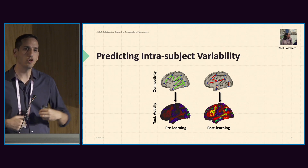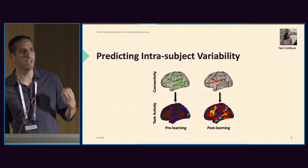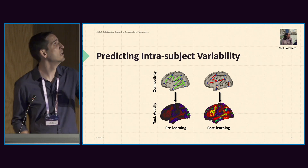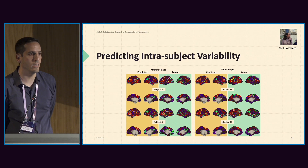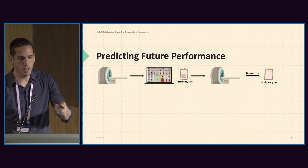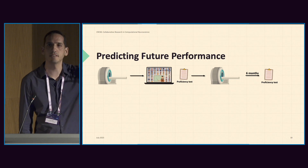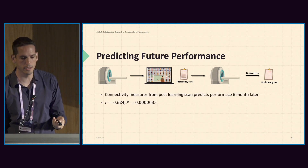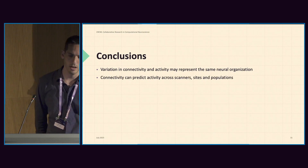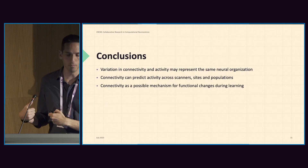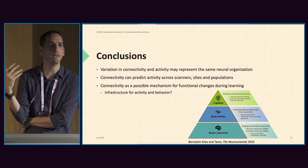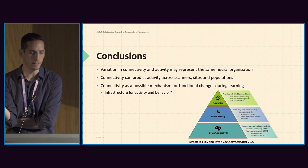The last point is the question of whether we can take connectivity maps of a given subject and predict activity out of it, capturing intra- rather than inter-subject variability. This is now the same subject — not two different subjects — but prior and post learning. And indeed we managed to predict activity maps from connectivity pre and post learning. We can actually predict future scores from scans immediately after the task. I would like to suggest that variation in connectivity and activity may represent the same neural organization, that connectivity can predict activity across scanner sites and populations, but also intra-subject variability — and perhaps connectivity may be thought of as the infrastructure for changes in brain activity and behavior.